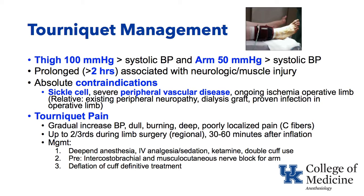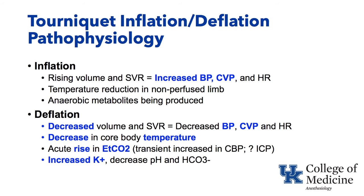Issues with inflation and deflation of a tourniquet: when you inflate a tourniquet, systemic vascular resistance goes up, and blood pressure and CVP will go up during inflation. That limb will continue to metabolize anaerobically and produce acid, and the temperature will go down in that limb. So when you deflate the tourniquet, all those anaerobic metabolites — acid, CO2 — go into the central circulation, and the cooler blood will decrease core body temperature. Deflation will decrease volume and systemic vascular resistance, and blood pressure and CVP often go down.